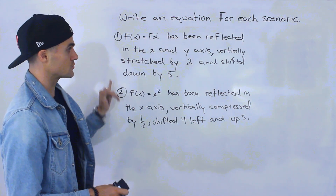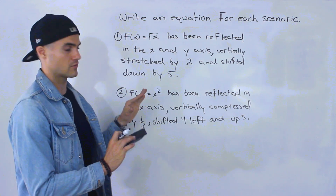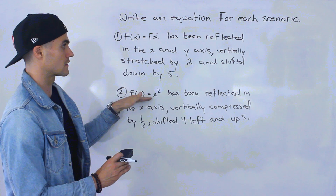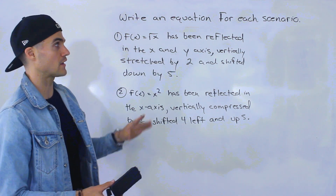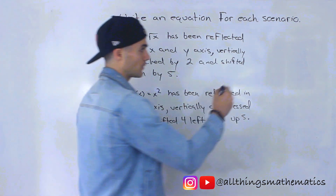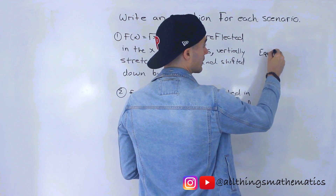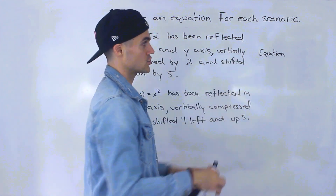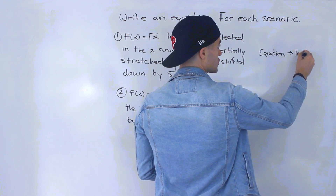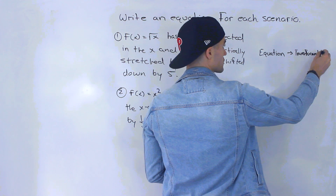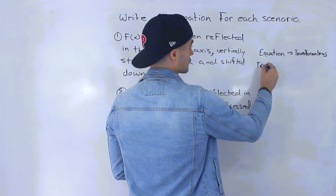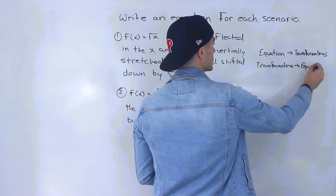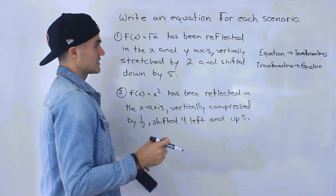Notice we have to write an equation for each of these two scenarios. This is a unique kind of question we haven't covered before. We're given the parent function in both cases — f(x) = √x and f(x) = x² — and we're given the transformations in words, then we have to write the equation. Before, when we were graphing, we were given the equation and then had to graph. Now we're going the opposite way: we're given the transformations and have to give the equation.